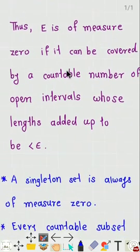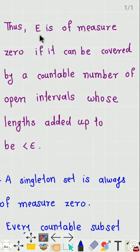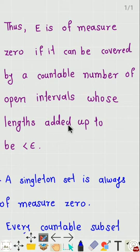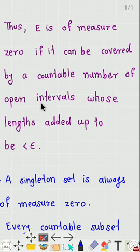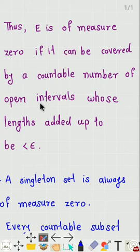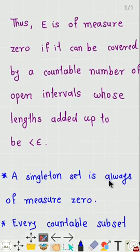Thus, E is of measure zero if it can be covered by a countable number of open intervals whose lengths added up are less than epsilon. That is the main idea of a set of measure zero: covered by a countable number of open intervals where the sum of lengths is less than epsilon. A singleton set is always of measure zero.